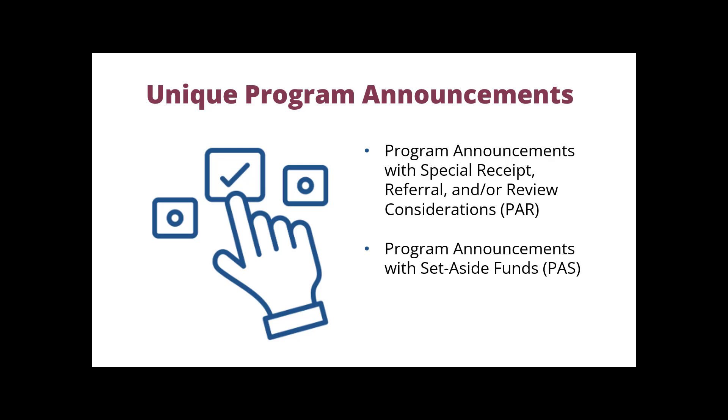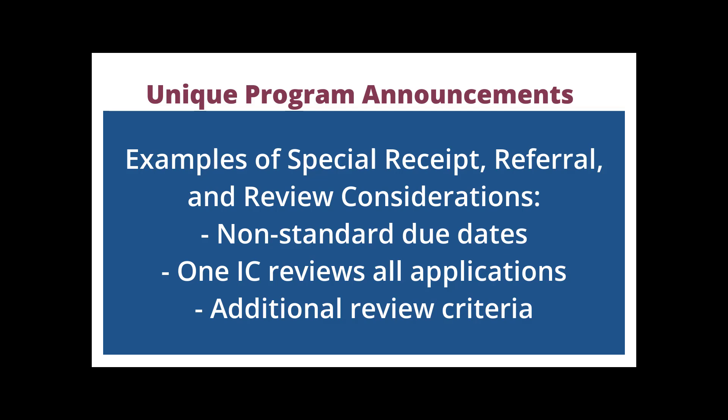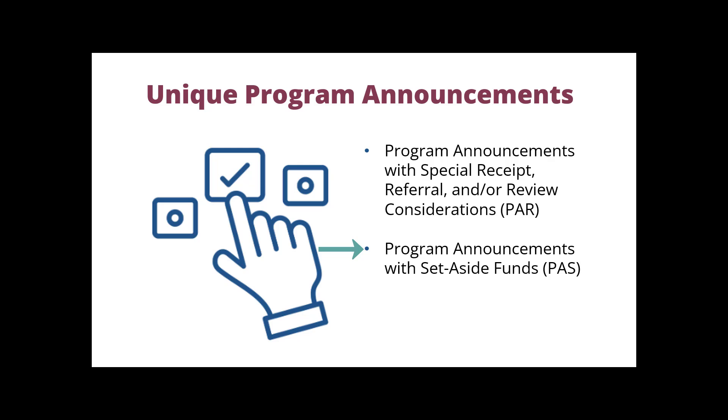There are some program announcements with special receipt, referral, and/or review considerations, which we call PARs. Examples of these special considerations include the use of non-standard due dates, assignment of all applications to a single IC to coordinate review with later reassignment to participating ICs for award, or the inclusion of opportunity-specific review criteria used in addition to standard review criteria. We also have program announcements with set aside funds, which we call PASs.